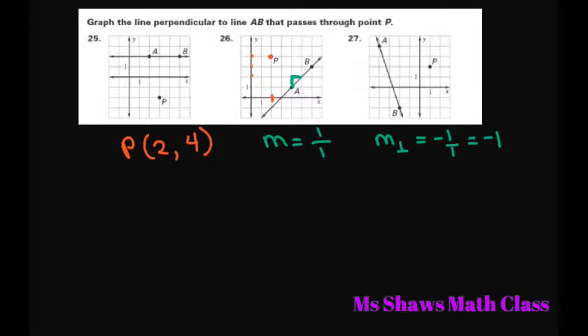So to find the perpendicular line and to graph it, we're going to write y equals mx plus b. Plug in your perpendicular slope. Substitute the m for negative 1 plus b.